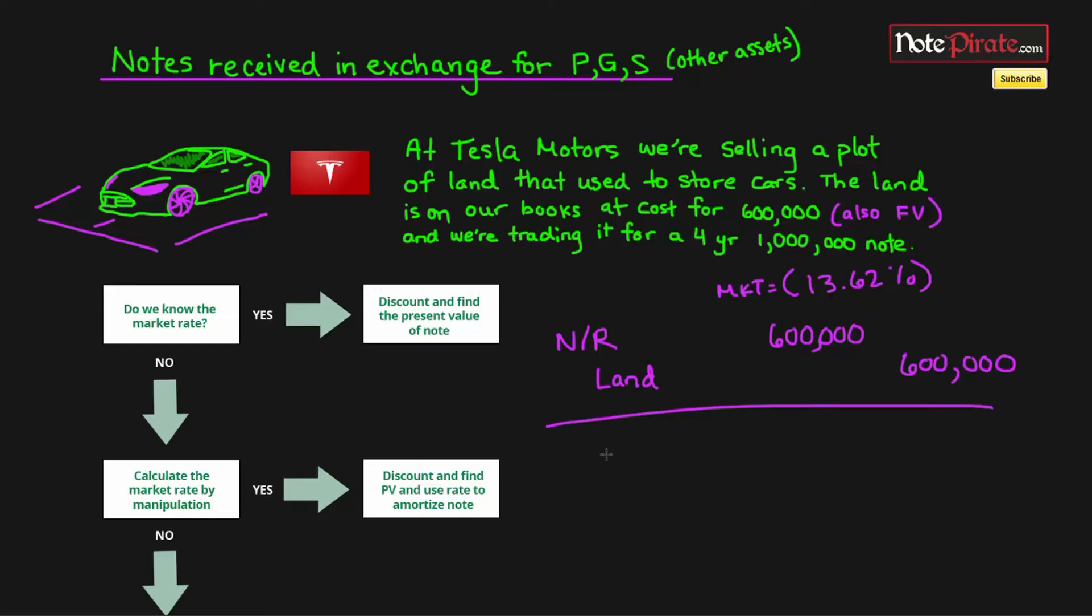There's that optional method for reporting a note receivable by using a contra-asset account. We would have note receivable and discount on note receivable, and then land. Since the note receivable at face value is one million, and we're reporting its net realizable value at $600,000, we'll have note receivable at one million, and then the discount will be $400,000. Therefore the net realizable value of note receivable will be $600,000, because these two will offset each other.